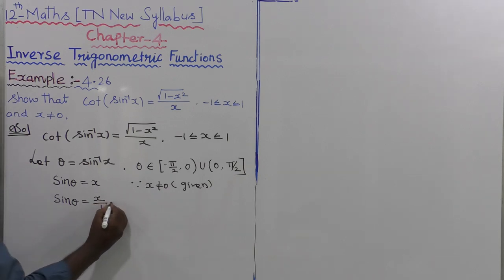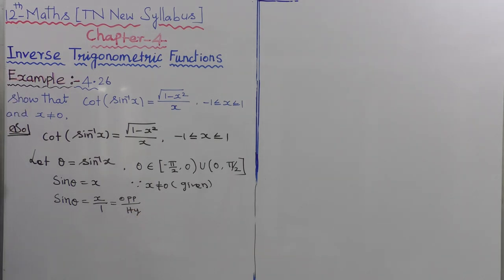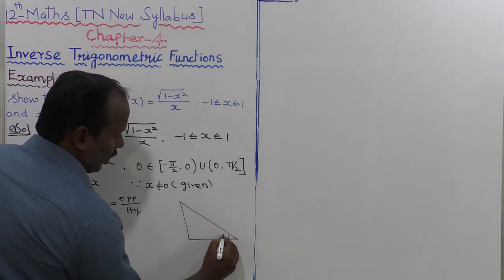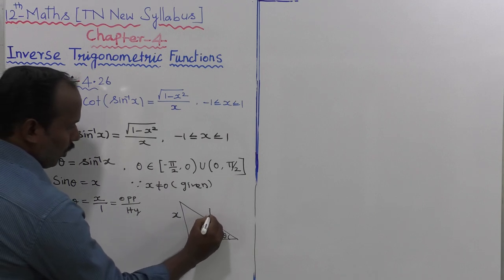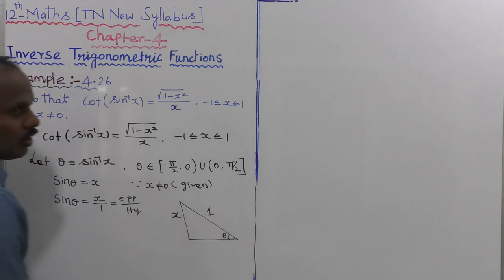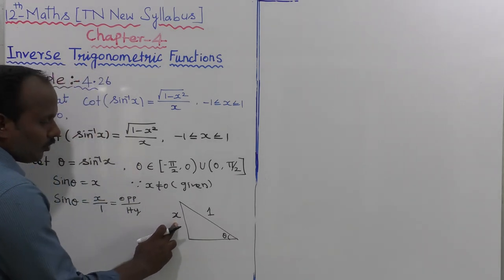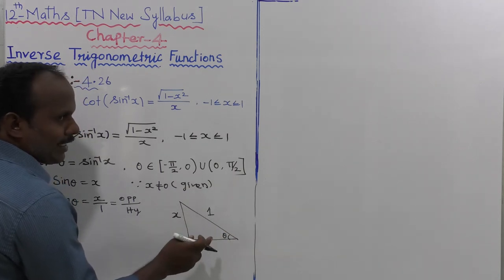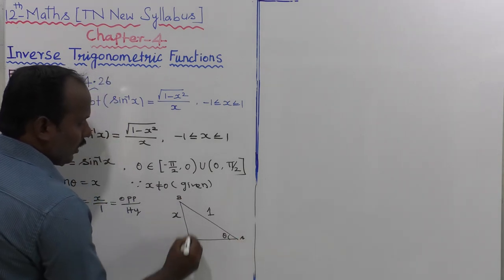So, sin theta is equal to x divided by 1, which is in the form of opposite side divided by hypotenuse. Now let us take a right angle triangle. This angle is theta. The opposite side is x and the hypotenuse is 1. Next, we need to find out the adjacent side.